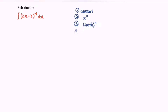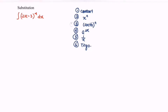Number four: exponential function. Number five: reciprocal function. Number six: trigonometric functions. Referring to the question, for this case I'm going to use rule number three because it matches the form.